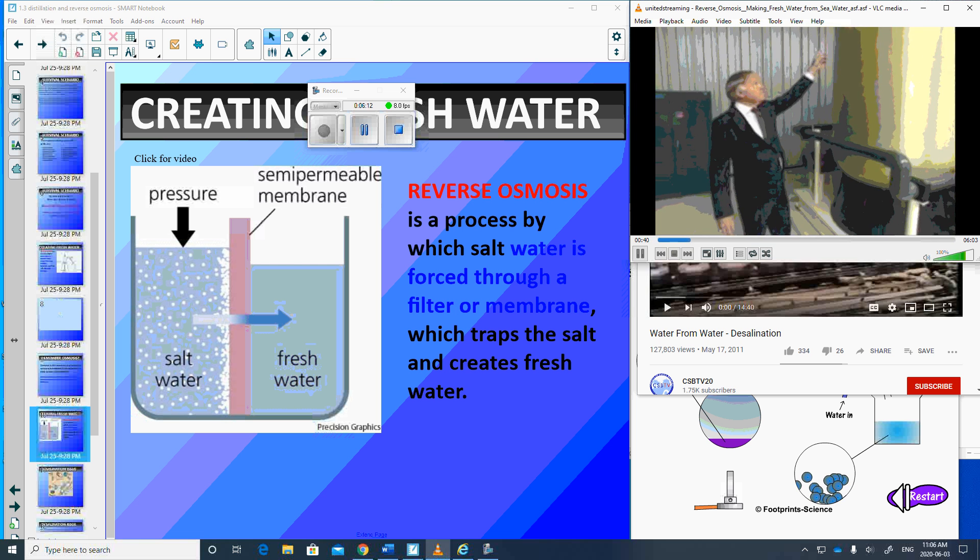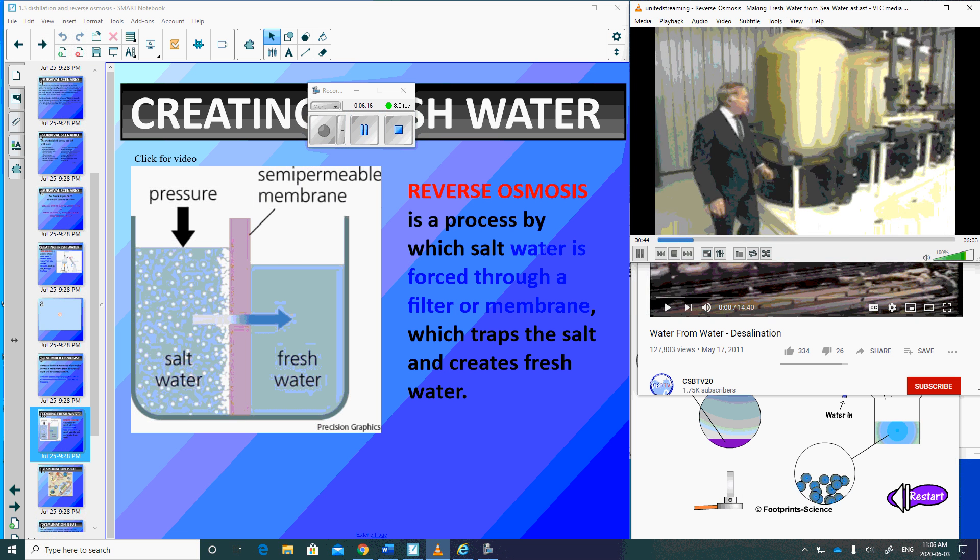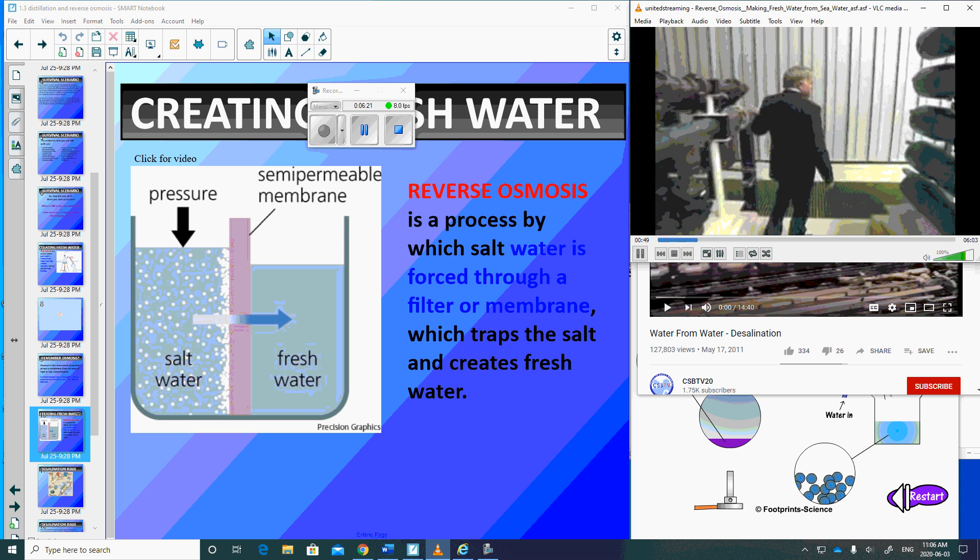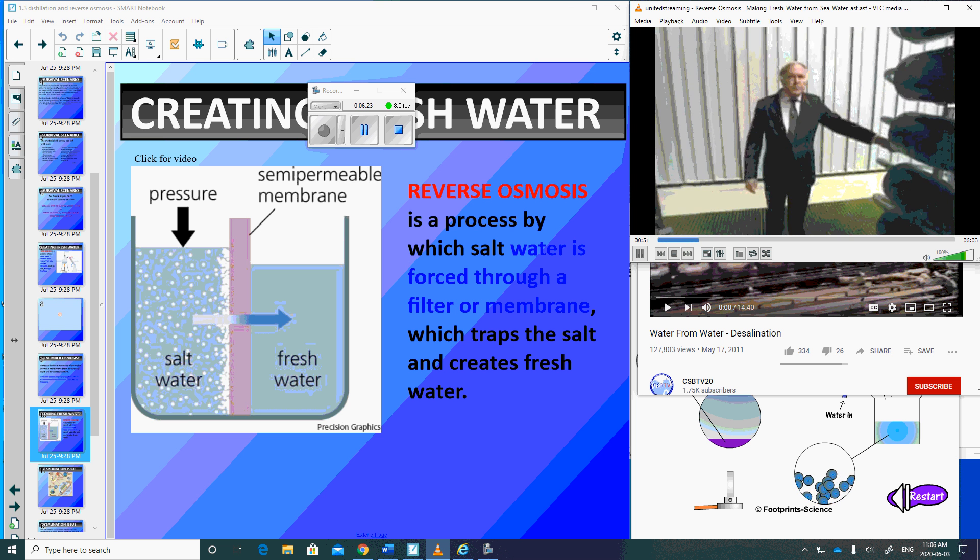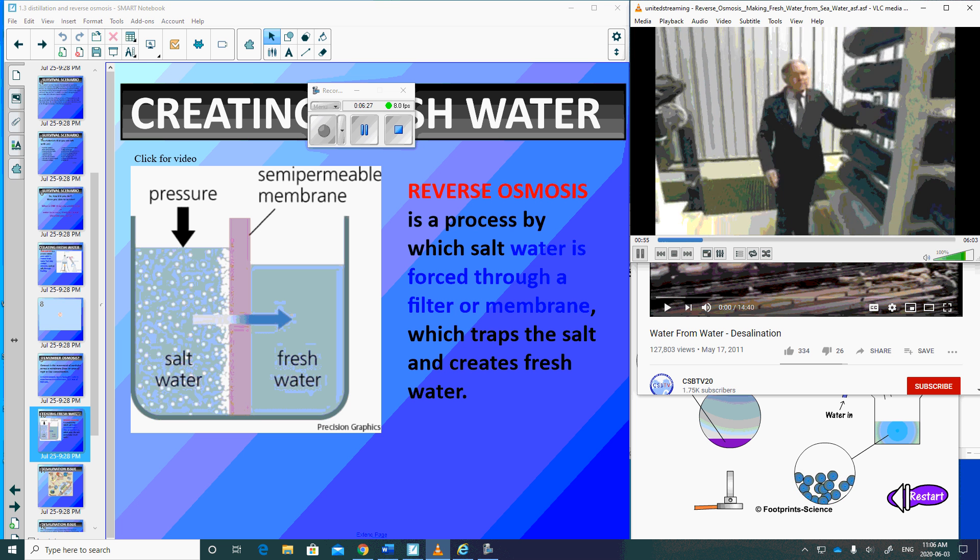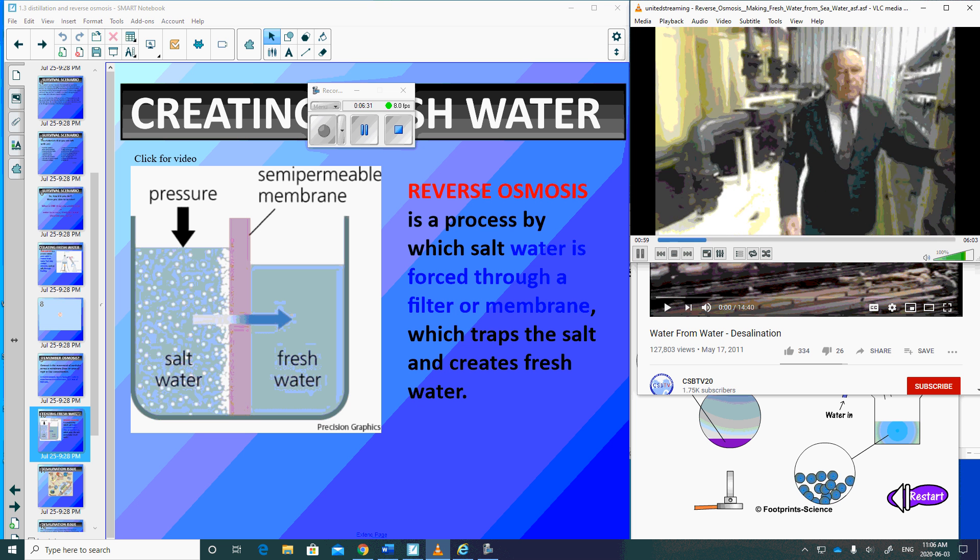Okay, water comes in the top, goes down to the media filters here, comes over and comes out this pipe here, travels along the pipe, comes over to the high-pressure pumps here. The high-pressure pumps push it through the semi-permeable membranes. There are 15 membranes in five pressure vessels.